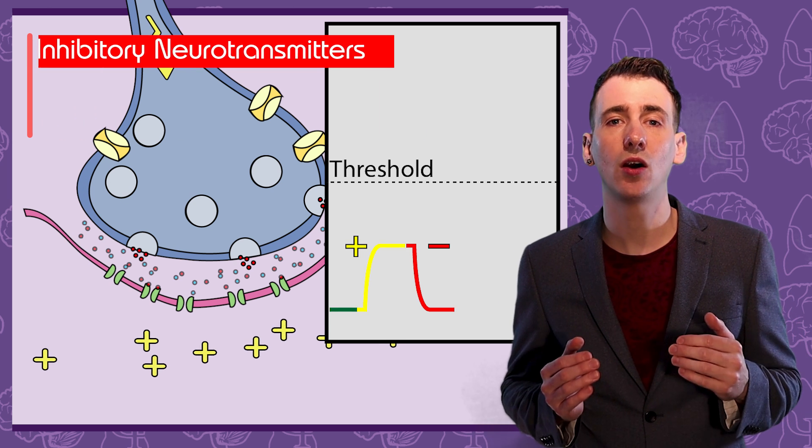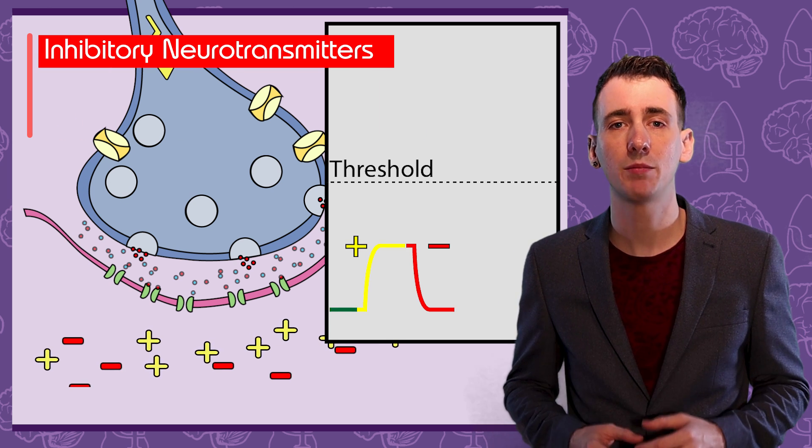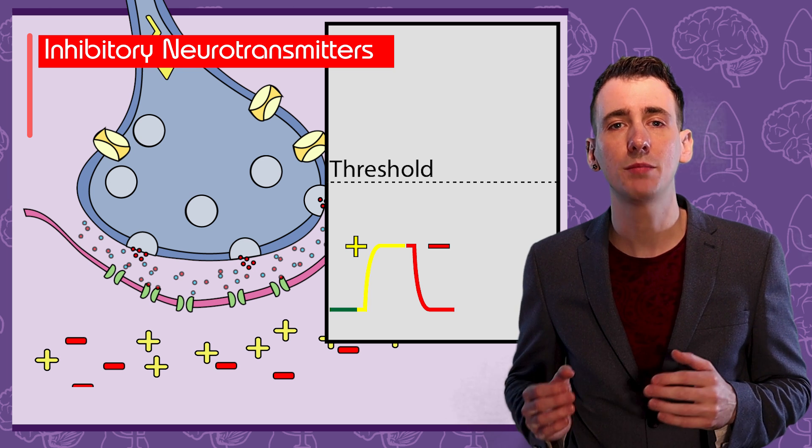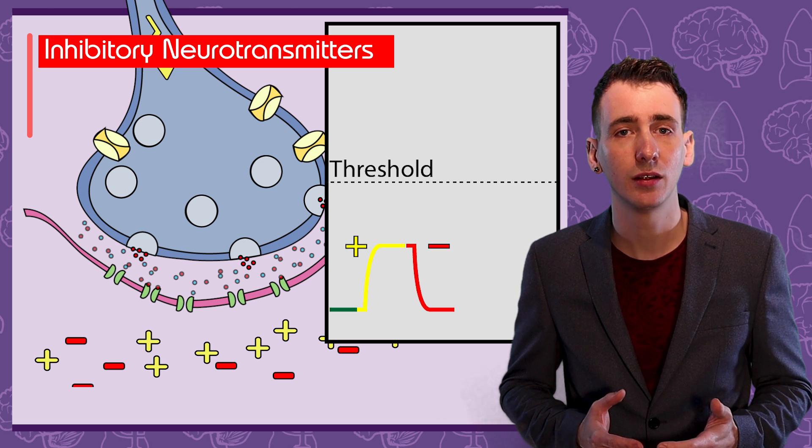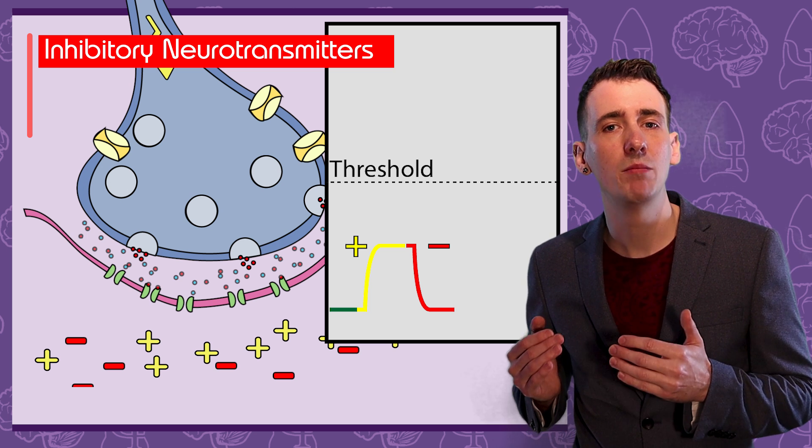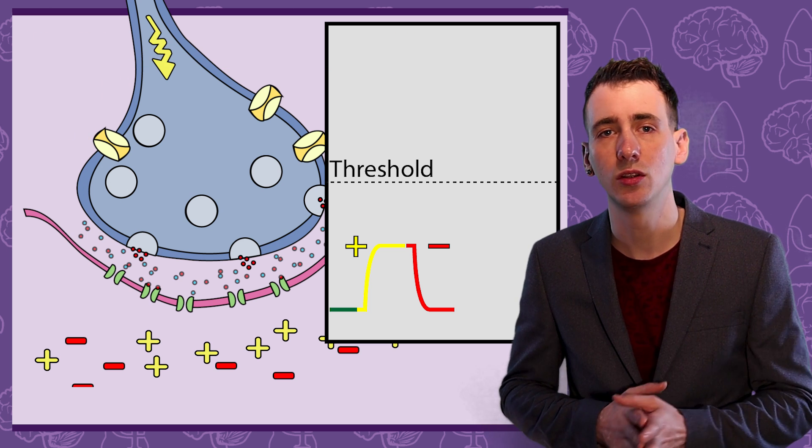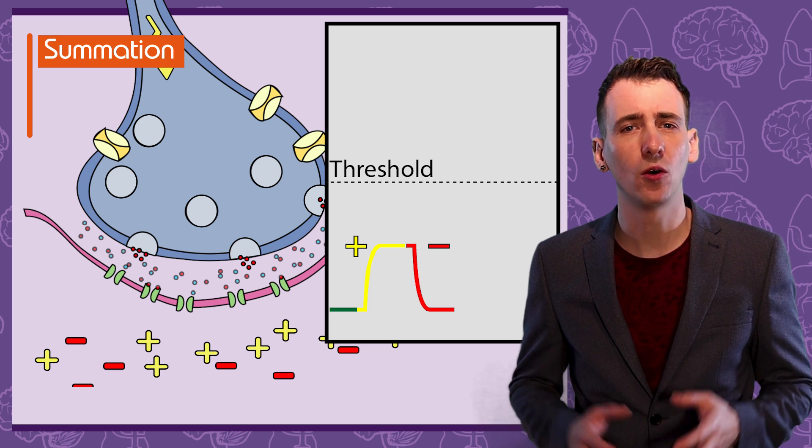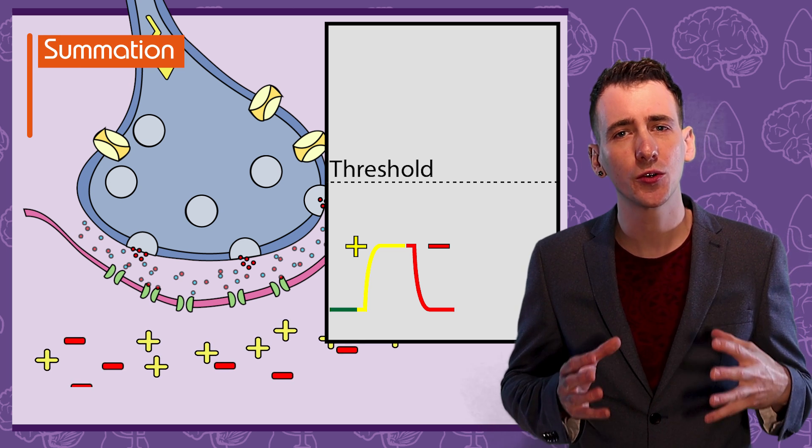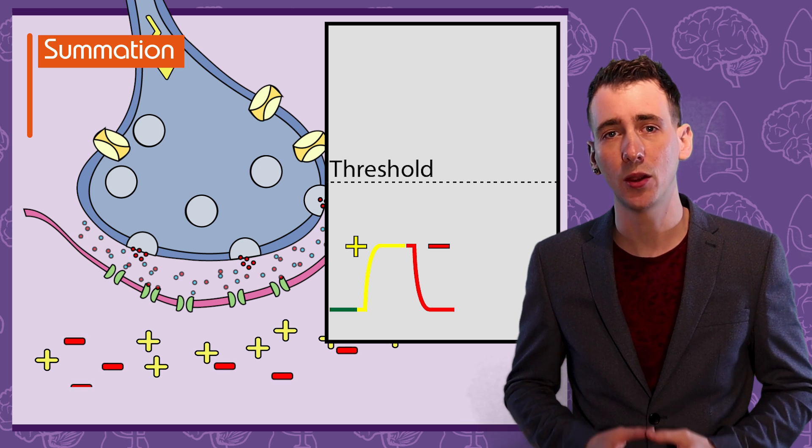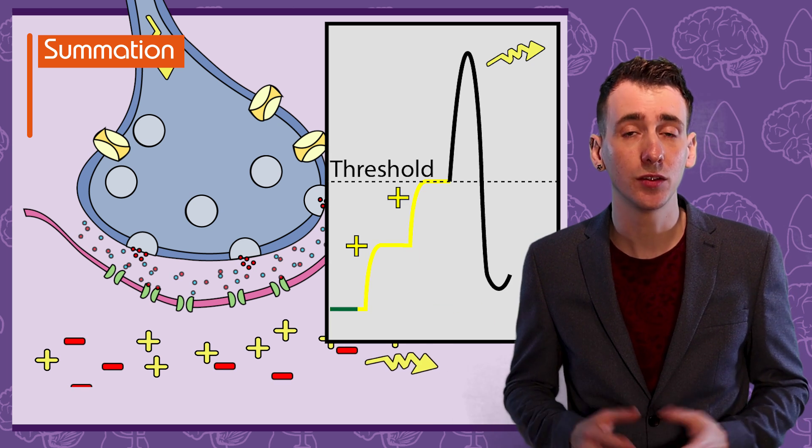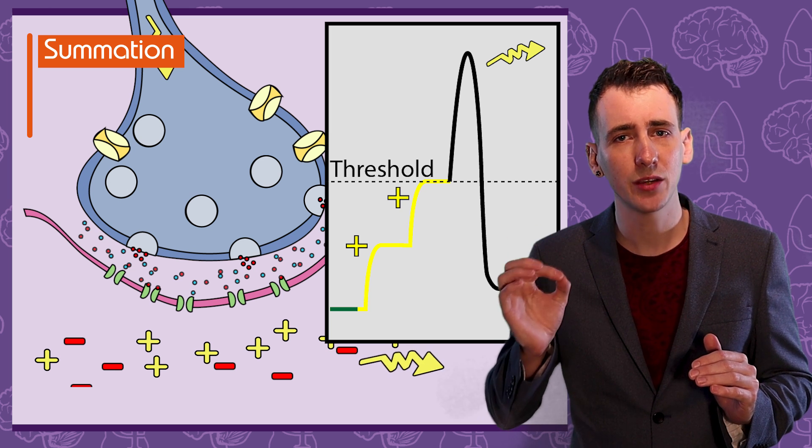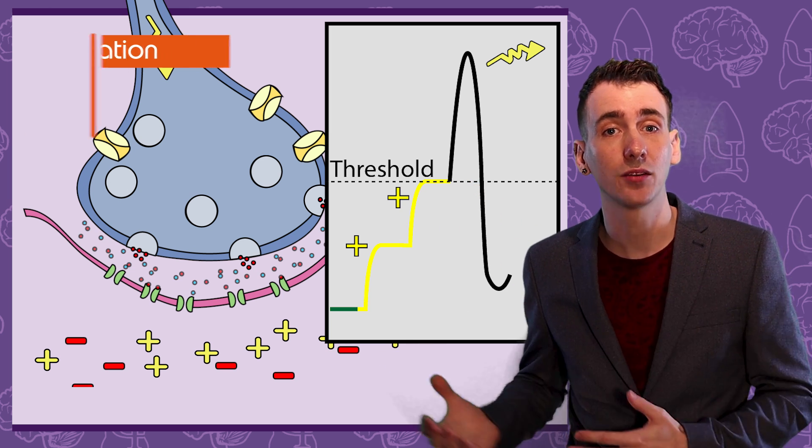However, some neurotransmitters are inhibitory. When they're detected by the receptors, they hyperpolarize the postsynaptic neuron, making it more negative by releasing potassium from the cell. This pushes it further from its threshold and makes the formation of a new action potential less likely. So what's summation? Summation is the effects of all the excitatory and inhibitory neurotransmitter influences on the postsynaptic cell. These are added and subtracted, so summed, and if the threshold is reached, then the new action potential forms, and then travels down the next axon.